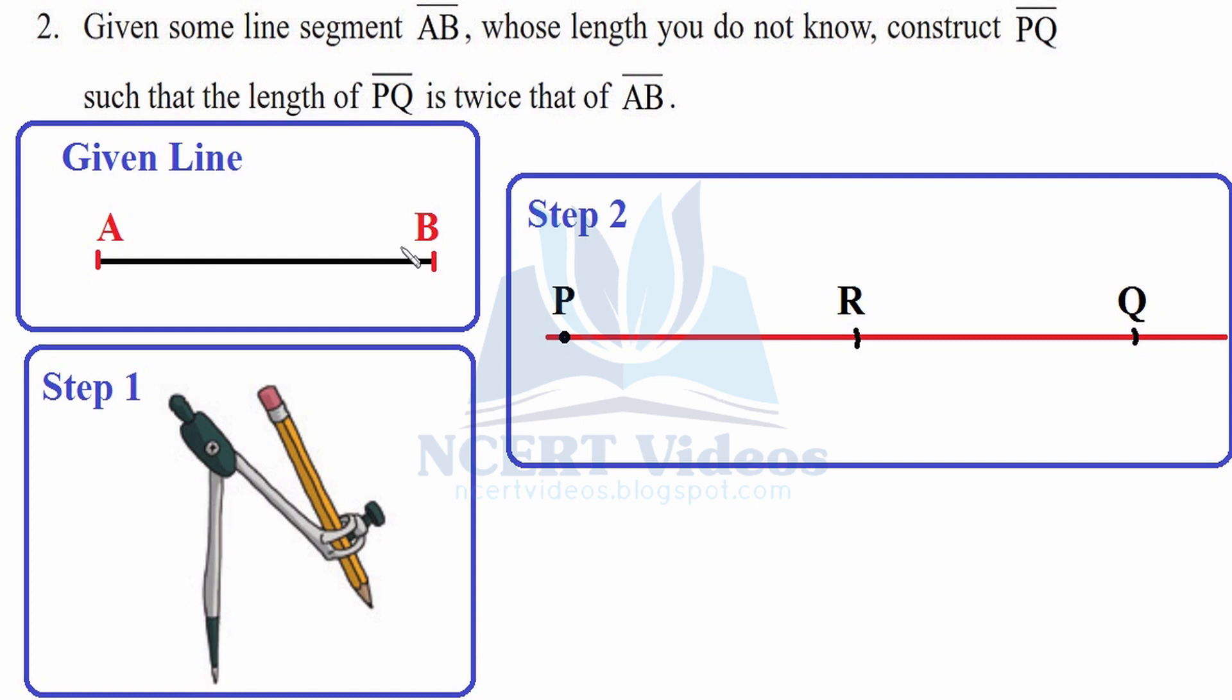Without changing it, in step two we will make a line first, name it L again with assumption. Now we will pick our compasses without changing its radius and put the needle at point P on the line. First arc is drawn and named as point R.